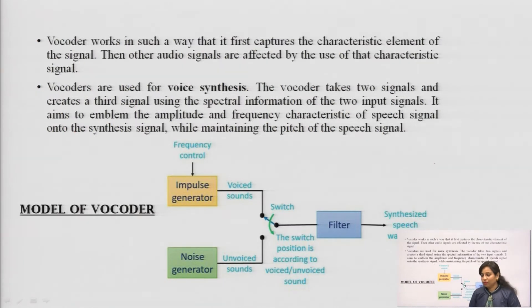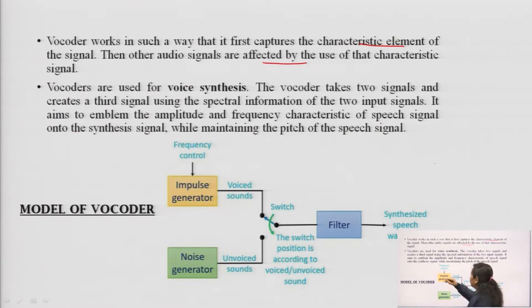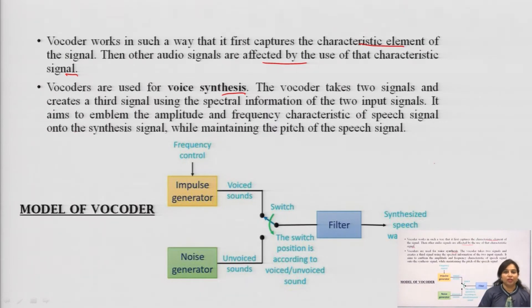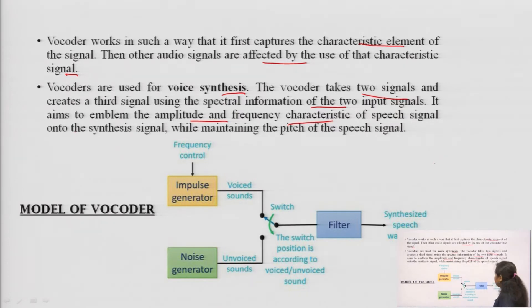Vocoder works in such a way that it first captures the characteristic elements of the signal, then other audio signals are affected by the use of that characteristic signal. Vocoders are basically used for voice synthesis — it is a kind of analysis and synthesis model, where analysis is done at the transmitter side and synthesis is done at the receiver side on the recorded signal. The vocoder takes two signals and creates a third signal using the spectral information of the two input signals. It aims to emulate the amplitude and frequency characteristics of the speech signal.